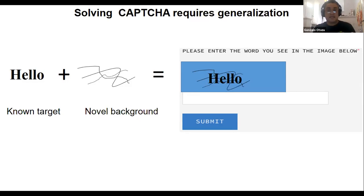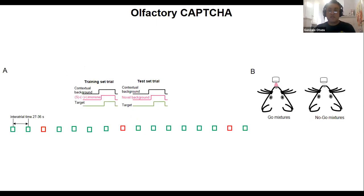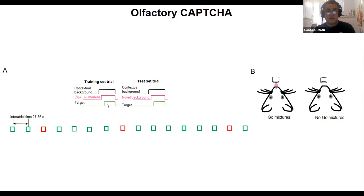We translate this into olfaction using head-fixed, water-deprived mice. We train them to lick if one of two target odors is present and to refrain from licking for no-go odors. The task includes a contextual background (limonene) followed by the target. Animals train over nine days, then we replace the limonene with a novel background odor — creating our olfactory CAPTCHA.